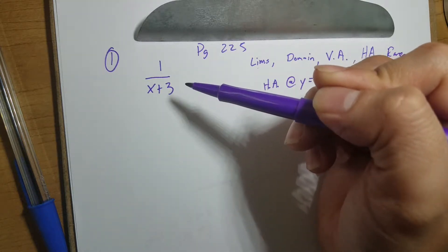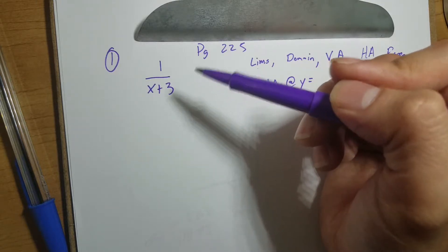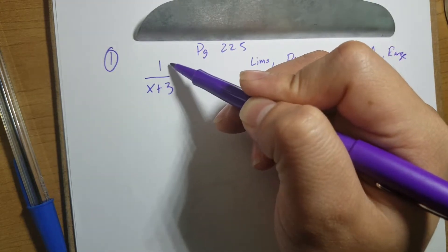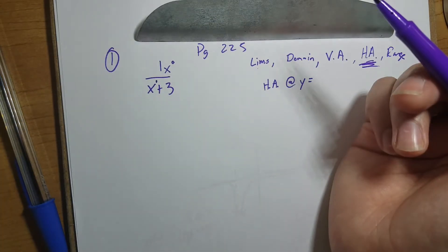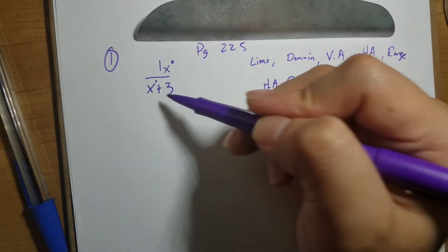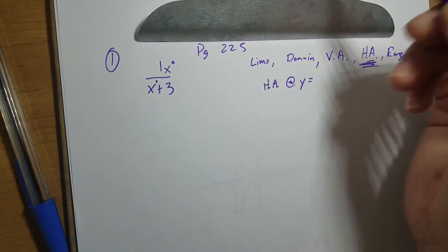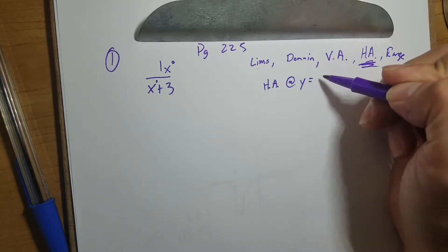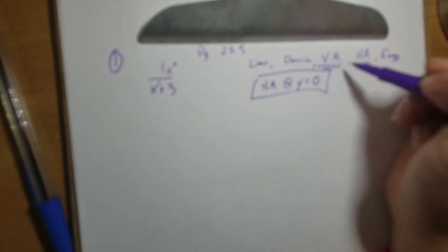The leading coefficients are the same, but when we're talking about degrees, the numerator is x to the zero and the denominator is x to the first power. So the denominator has the greater degree. We know that whenever the denominator has the greatest degree — that's our first rule for horizontal asymptotes — y is going to be equal to zero.